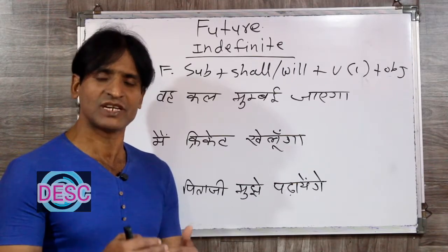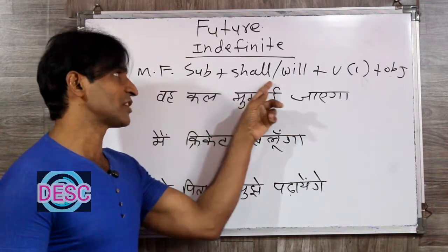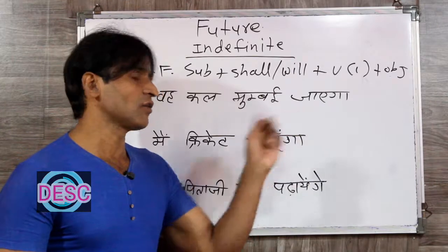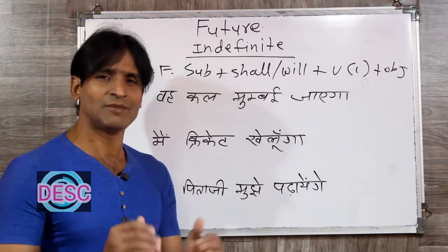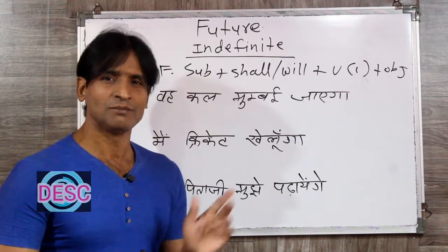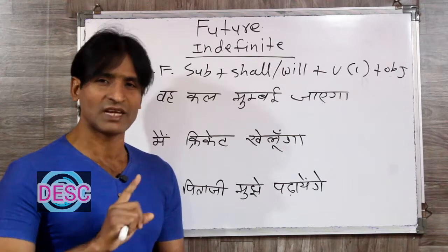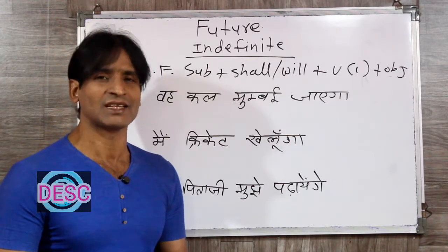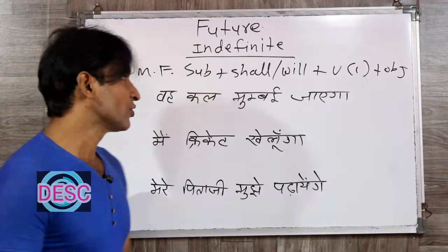The making formula for future indefinite tense is: Subject + shall/will + first form of the verb + object. Now where do we use shall or will? If you watch our previous video, it is explained — with I and we we use shall, and with everyone else we use will. But in spoken language we can use will with everyone.